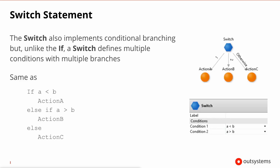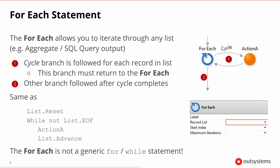On the switch, you define a set of conditions: if condition 1 is fulfilled it takes the branch for condition 1, if condition 2 is fulfilled it takes the branch for condition 2, otherwise it takes the remaining branch. There is also the foreach statement, which allows you to iterate through any list and execute code on every record of that list. As long as the list has items, the cycle branch is followed and it comes back to the foreach node. After the list is depleted, the other branch is taken and the foreach exits.